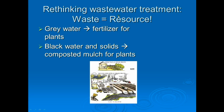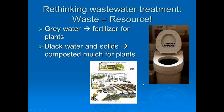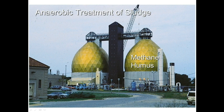We can rethink wastewater treatment. If we look at waste as a resource, gray water is a great fertilizer for plants, but it just goes out like black water. Black water can be composted and turned into mulch for plants. This composting toilet — I believe this was in the Middle East — uses anaerobic treatment of sludge. They take their waste, treat it anaerobically — meaning without oxygen — and extract methane, which they can then use as energy.